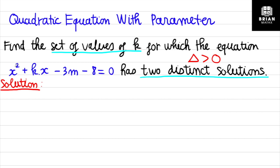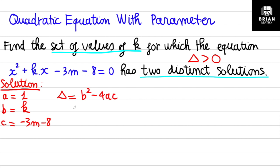You have to find the condition for the discriminant to be greater than zero so this equation will have two distinct solutions. The first step is to find the expression of the discriminant. For this quadratic equation, the value of a is 1, value of b is k, and value of c is −3k − 8. Then find the discriminant: b² − 4ac, and substitute the values.